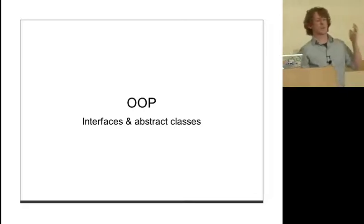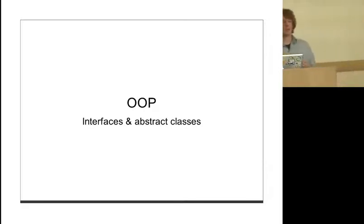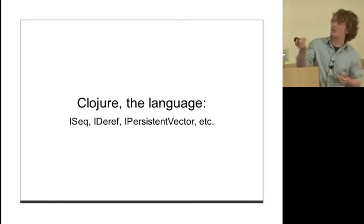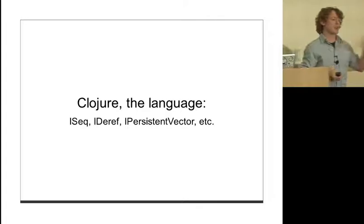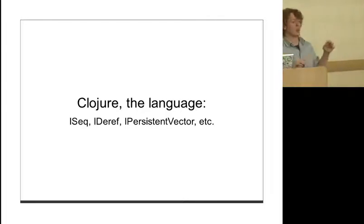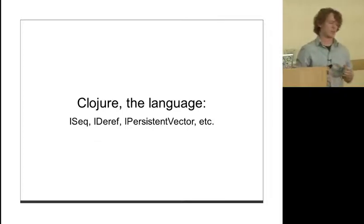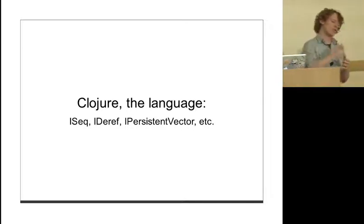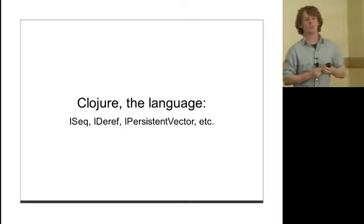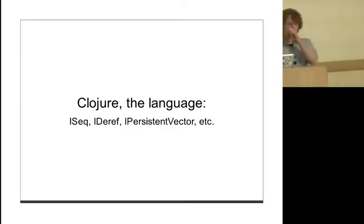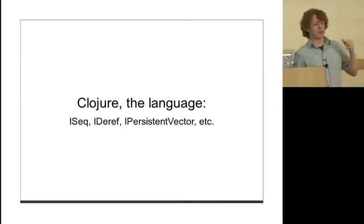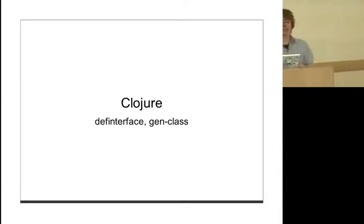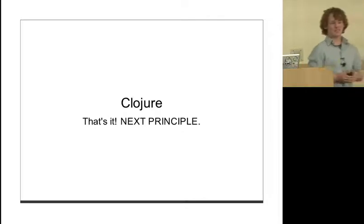OO says with the dependency inversion principle that we should be depending on abstractions, not concretions. The effect in OO is that an abstraction is like an interface or an abstract class, while a concretion is a concrete class. In Clojure the language, we see a good example in ISeq, IDeref, IPersistentVector. Interfaces are all over the place. Rich has done a great job creating these abstractions so if we want to replace some core piece of functionality - like make our own version of an atom - we can just implement IAtom and it'll pretty much work.